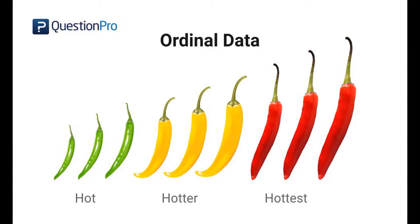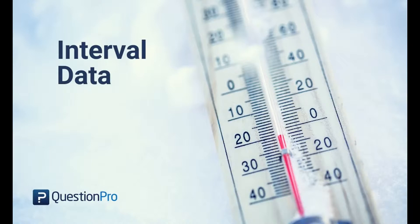Ordinal tests include Spearman's Rho, Wilcoxon, and Mann-Whitney. Interval level data, or parametric data, is measured in fixed units with equal distance between points on the scale. For example, if we measure someone's height as being 156 centimeters, we know this is one centimeter shorter than someone who is 157 centimeters. There is a fixed interval between each unit — it's not subjective. Parametric tests include Pearson's R, related t-test, and unrelated t-test.